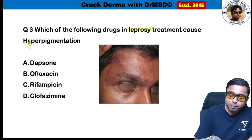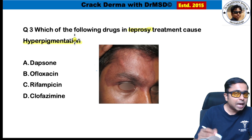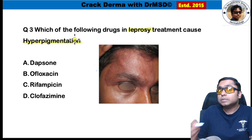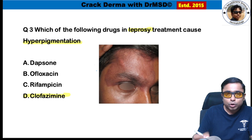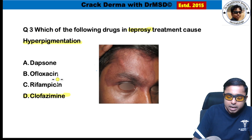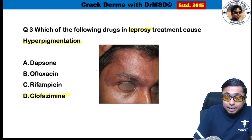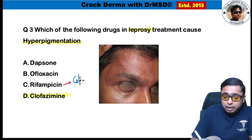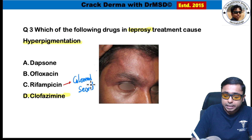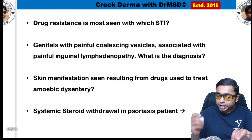Leprosy treatment and skin side effects: the medication producing hyperpigmentation of the skin is clofazamine. Rifampicin is associated with colored secretions — colored secretions are seen with rifampicin. Very important.